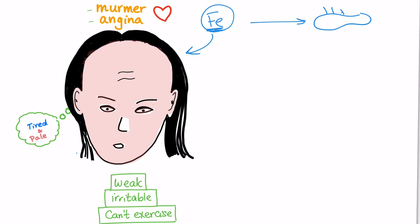Symptoms, as usual: Pale and tired. Tired and pale. Sometimes I get flow murmur. Sometimes I get angina, especially if I have a heart problem. I'm weak. I'm irritable. I cannot exercise. Weakness, irritability. Exercise intolerance.